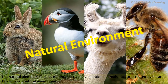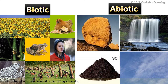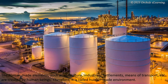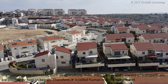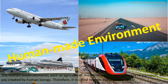The natural elements such as mountains, rivers, vegetation, animals, etc. are created by nature. This is called the natural environment. It includes the biotic and abiotic components. The human-made elements such as agriculture, industries, settlements, means of transport, etc. are created by human beings. Therefore, it is called the human-made environment.